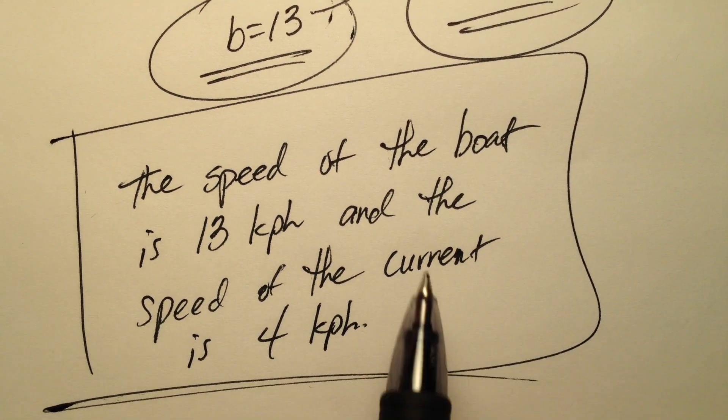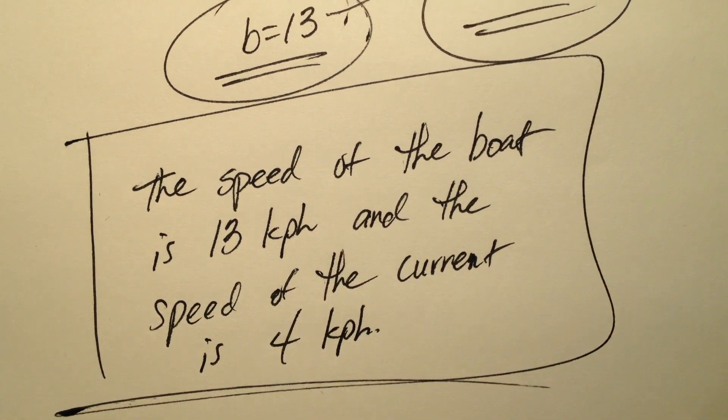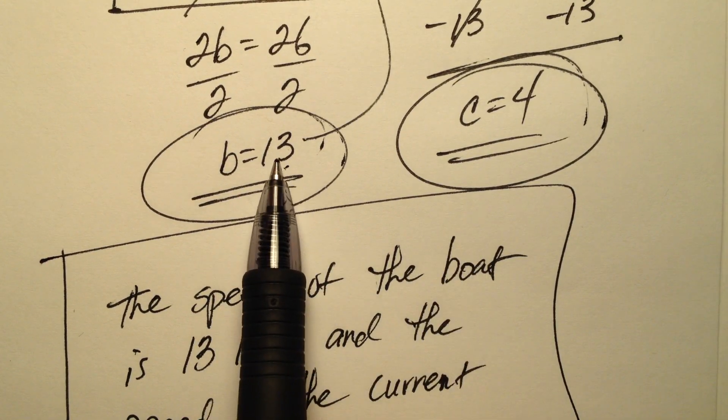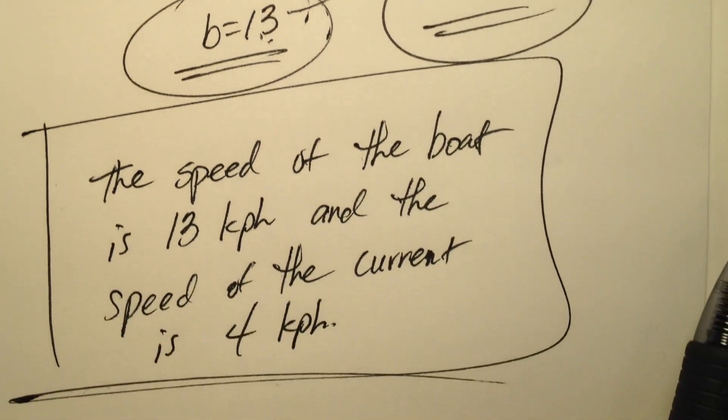So here is kind of our sentence that wraps up what's going on with our system, given the values for b and c, 13 and 4, respectively.